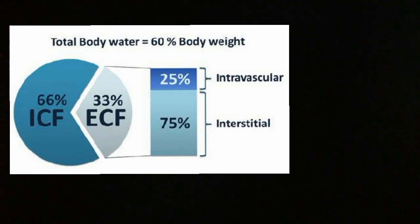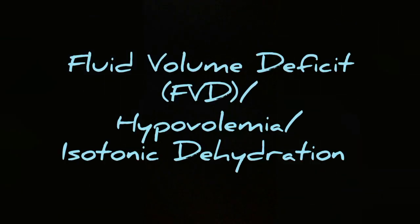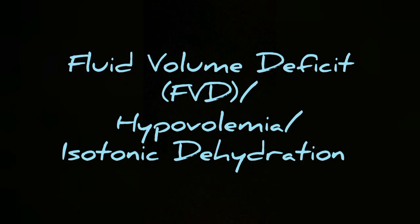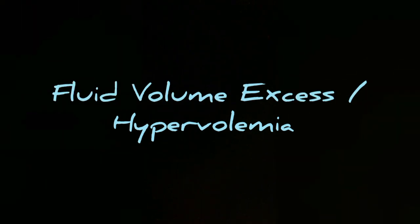If the water percentage goes beyond 60%, it would create an imbalance. If this value goes below 60%, it would be called fluid volume deficit or hypovolemia or isotonic dehydration. And if it goes above 60%, then that would be fluid volume excess or hypervolemia.